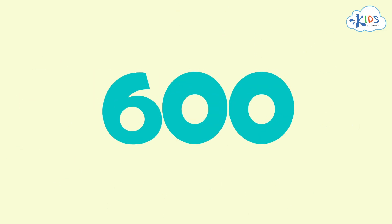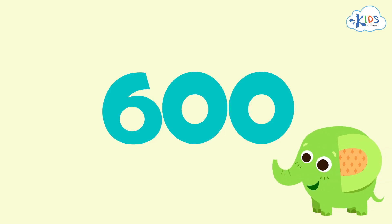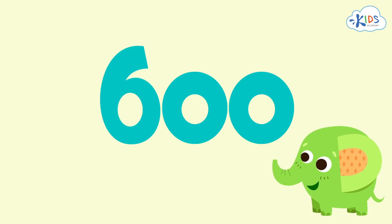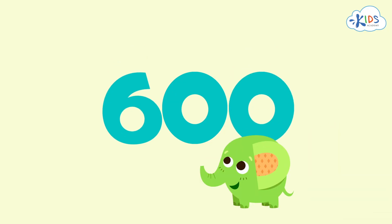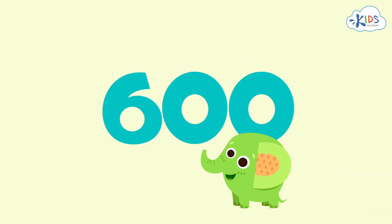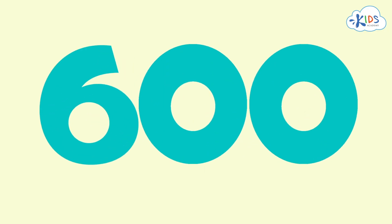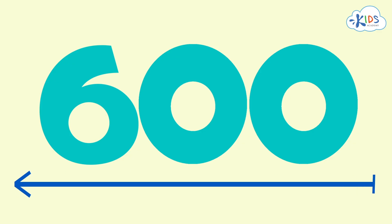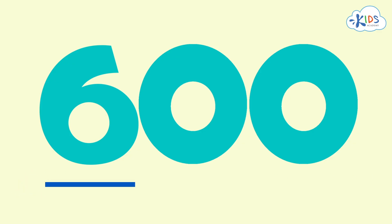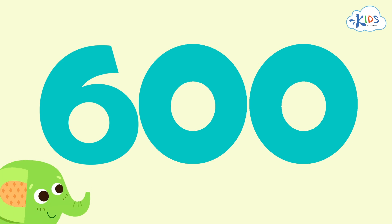Check out this number: 600. Only the 6 in the hundreds place has any value. There is a 0 in the ones place and a 0 in the tens place. Let's have a closer look at 600 to uncover the mystery of the hundreds place again. The hundreds place is the furthest left in the number 600, and since there are no other digits of value in either the ones or the tens place, we can look right to the hundreds place again.